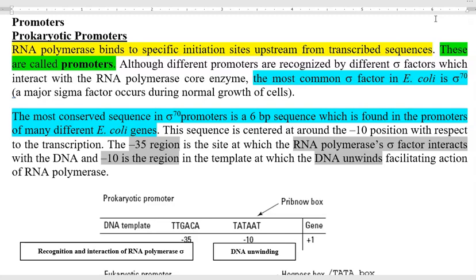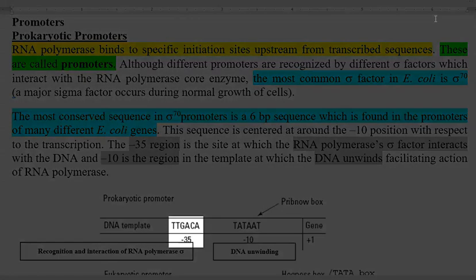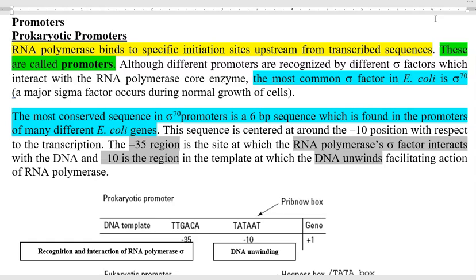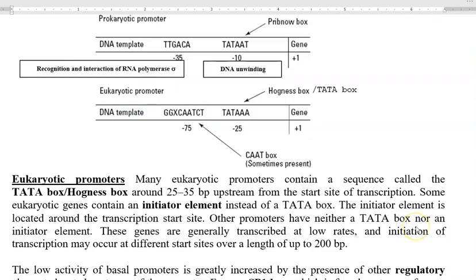There is another important position called the minus 35 region. This is the site at which the RNA polymerase sigma factor will be recognizing and interacting. Meanwhile, minus 10 is the region in which the DNA will start unwinding. This DNA unwinding facilitates the further binding of RNA polymerase in that region — that is the purpose of DNA unwinding at the minus 10 region.